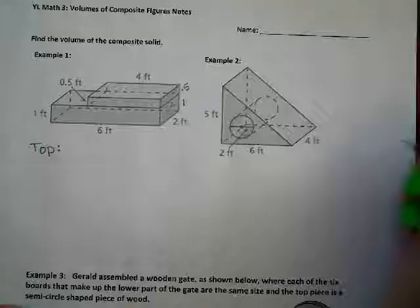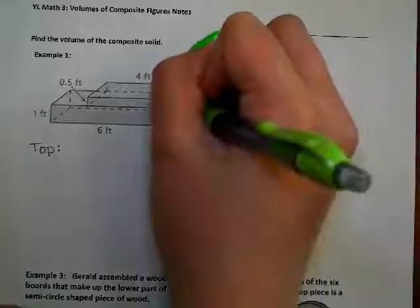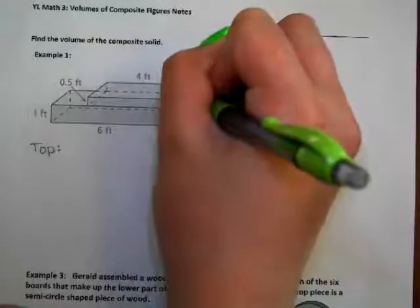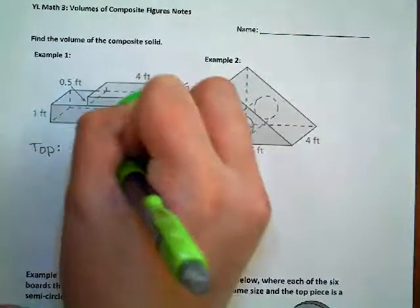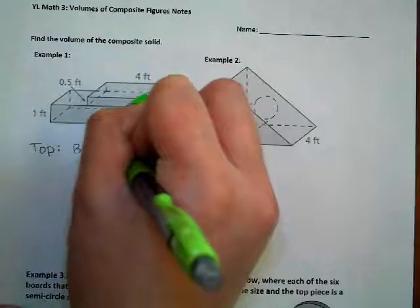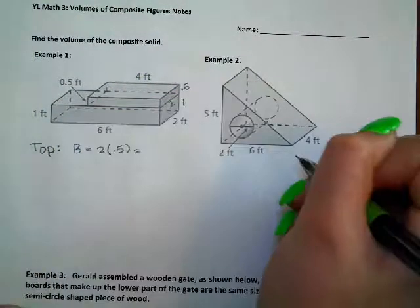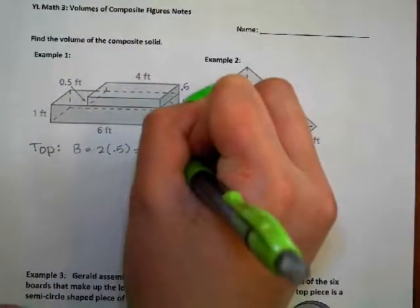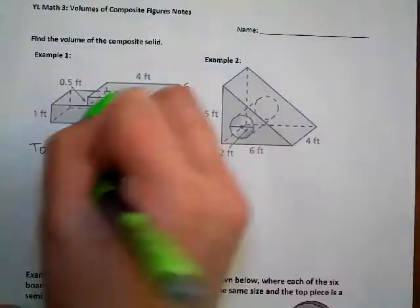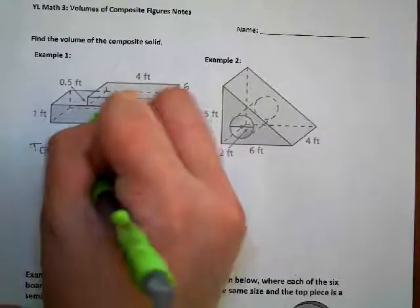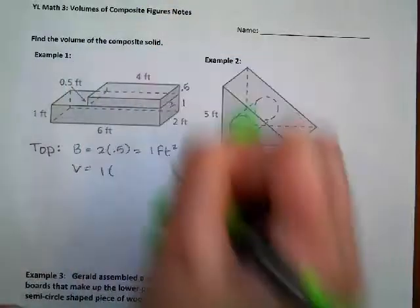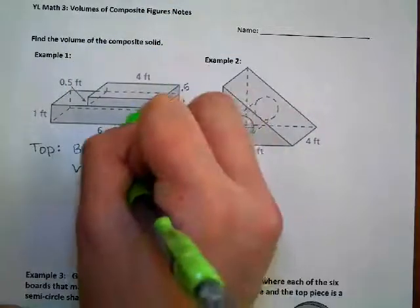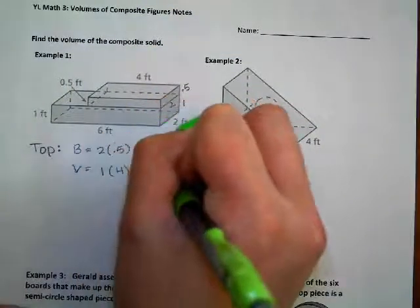For the top rectangular prism, the area of the base is two multiplied by 0.5. Two times 0.5 is one foot squared. Then the volume is the area of the base multiplied by the height of the rectangular prism, which is four, giving us four feet cubed.